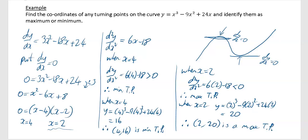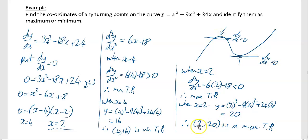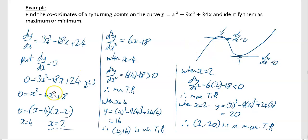Looking back at our rough sketch, this was a positive cubic going up, down, then up again. The maximum is at (2, 20), which sits to the left and higher up, and the minimum is at (4, 16), which is to the right and lower down. That matches the general shape we expected. That's the first example done.